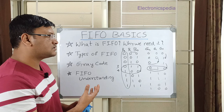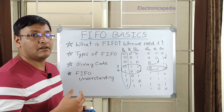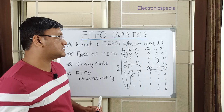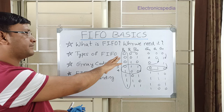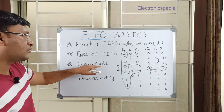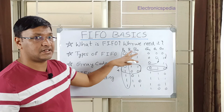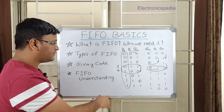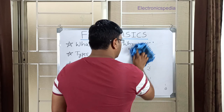Gray code is also an industry-standard number system used in electronic communications to reduce noise during signal transfer. I'll explain in the next video exactly why we need Gray code when designing FIFOs. Now let's move on to understanding FIFOs — the key signals and how the pointers work.